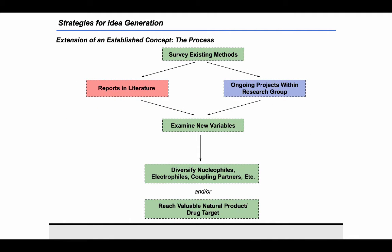Focusing on the researcher's perspective, I want to transition to talking about strategies for idea generation. The first strategy we'll call extension of an established concept. The researcher starts by surveying existing methods for a transformation — looking deeply into the literature and learning about related ongoing projects within the research group.